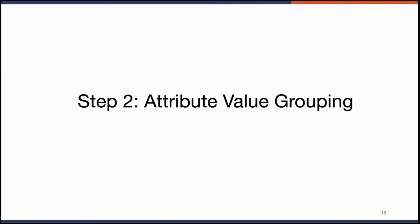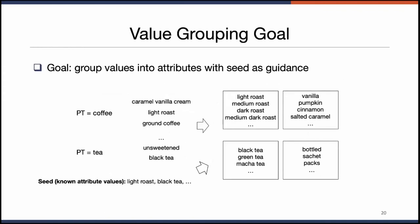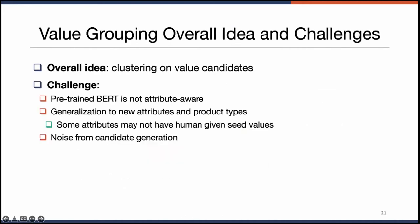In our second step, attribute value grouping, we have candidate attribute values and our goal is to group them into clusters of attributes, using weak supervision as guidance. We run clustering on the value candidates, but there are several challenges. First, a pre-trained BERT is not attribute-aware. Second, we want the model to generalize to new attributes and product types, including those without any seed values. Third, we must handle noise from the candidate generation step.